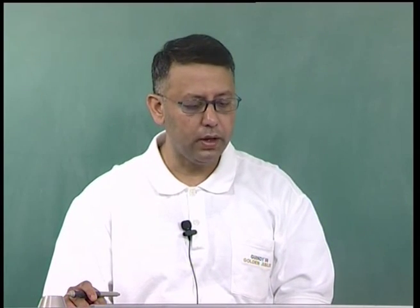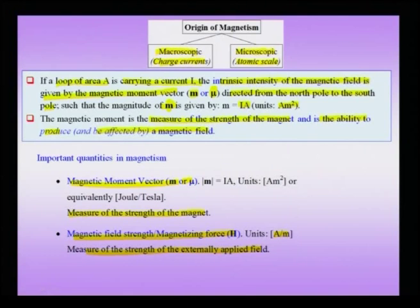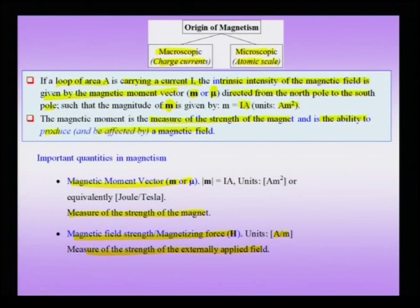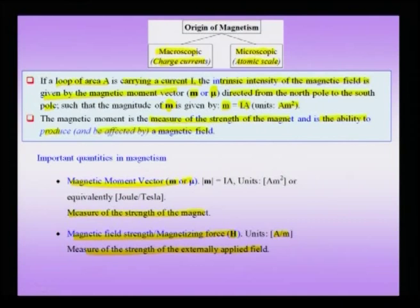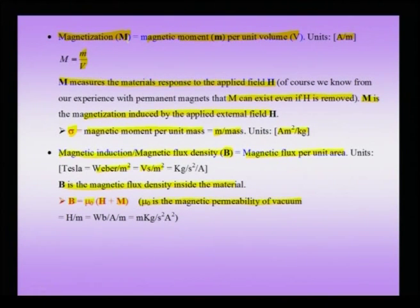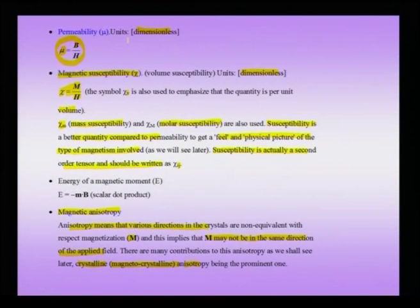To summarize: magnetism can come from macroscopic charge currents or from microscopic atomic-scale origins. A current-carrying loop with current I and area A gives a magnetic moment of magnitude I times A, making it a magnet with north and south poles. The important quantities in magnetism are: magnetic field strength H, magnetization M, magnetic flux density B, susceptibility chi, permeability mu, and magnetic anisotropy.